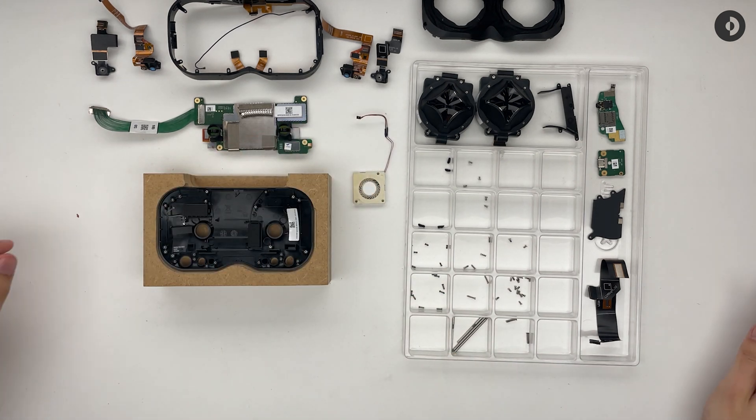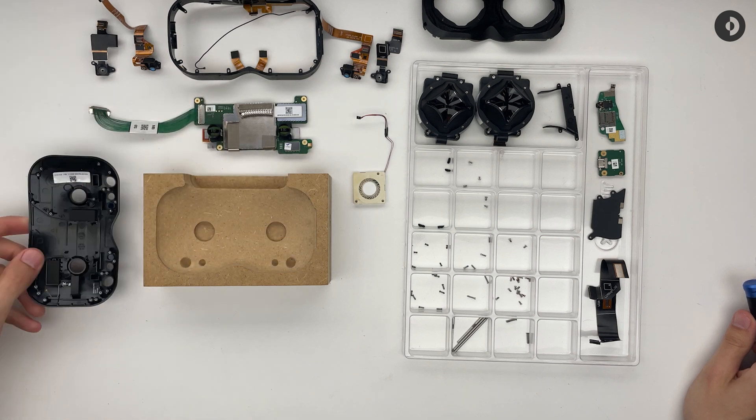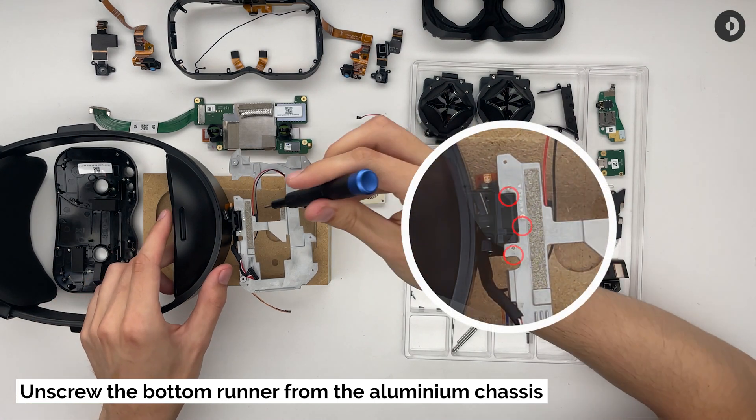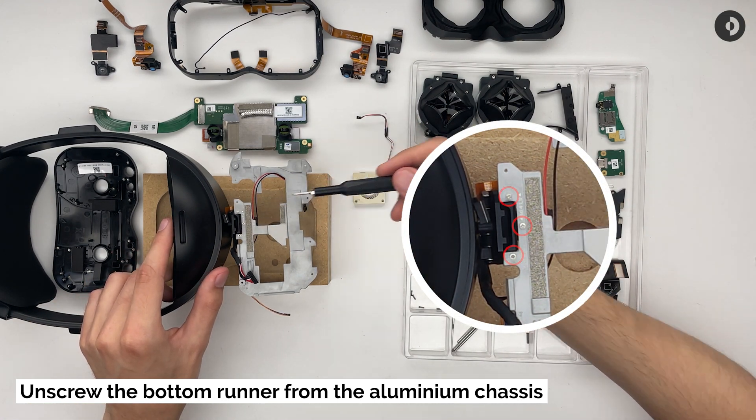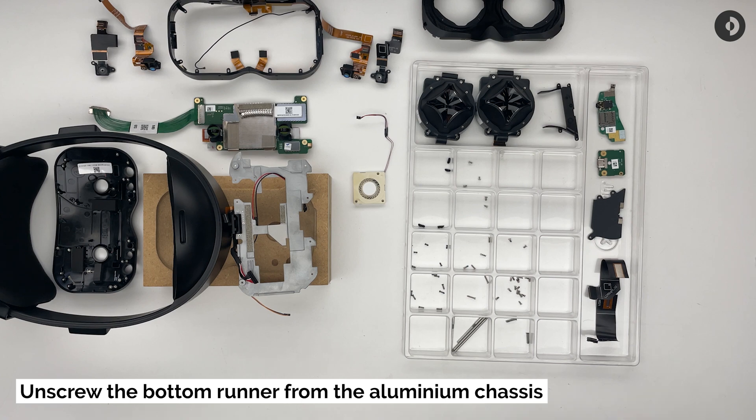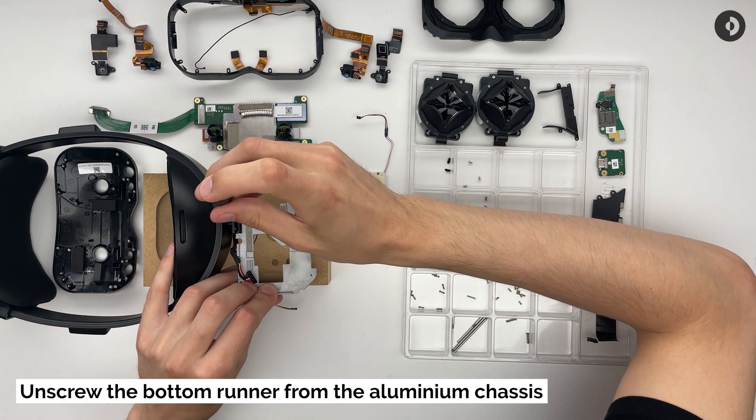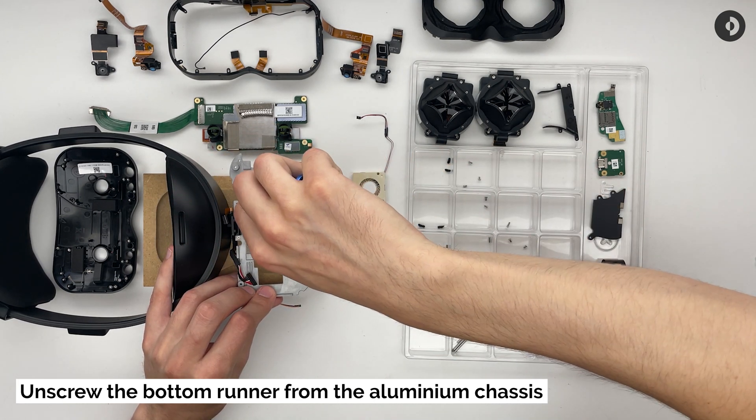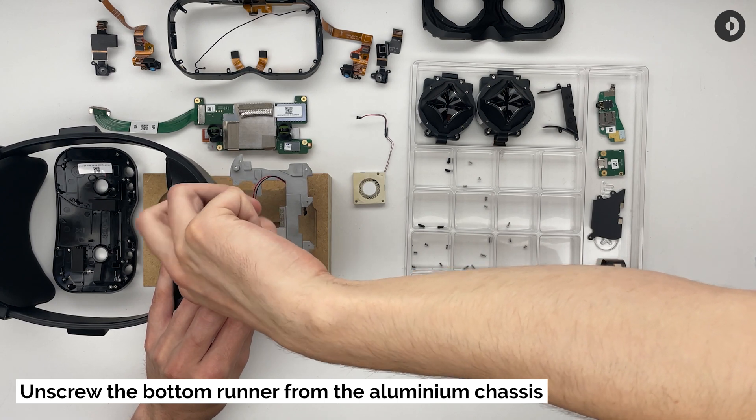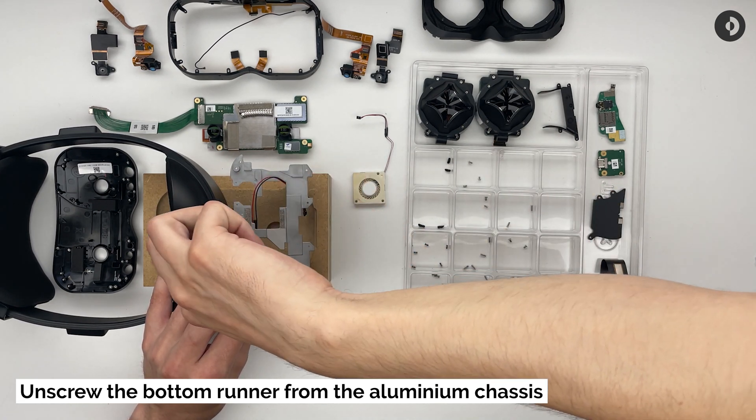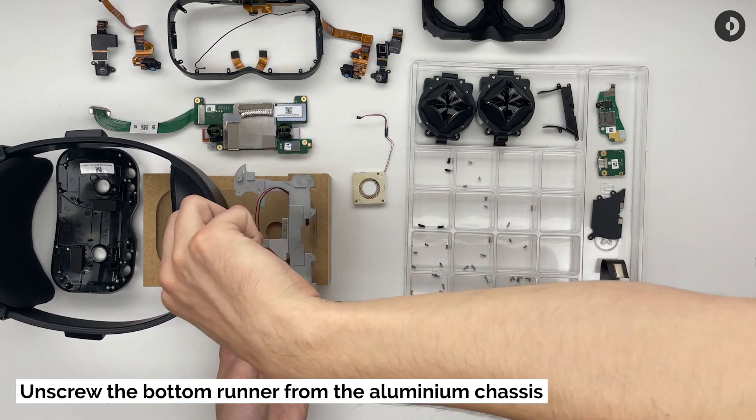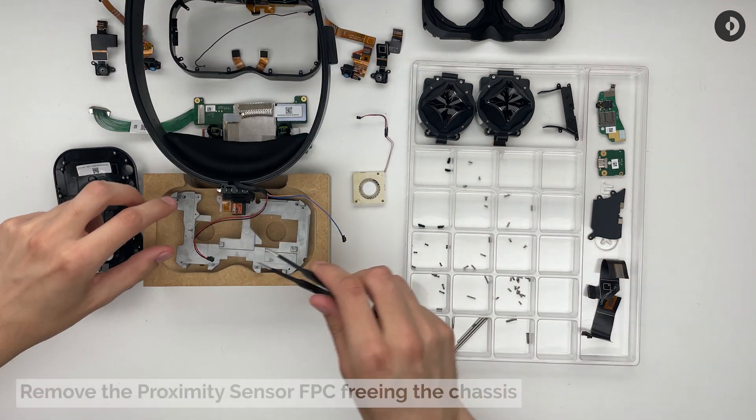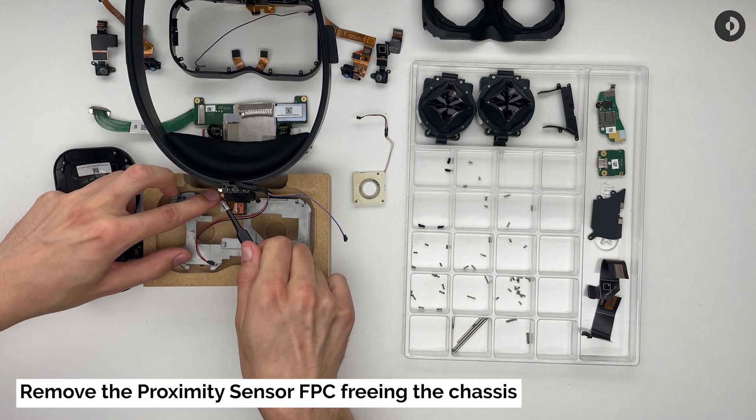The final part of this video is about separating the aluminium chassis from the headband. Remove all three screws securing the runner mechanism to the chassis. Disconnect the proximity sensor FPC to free the chassis.